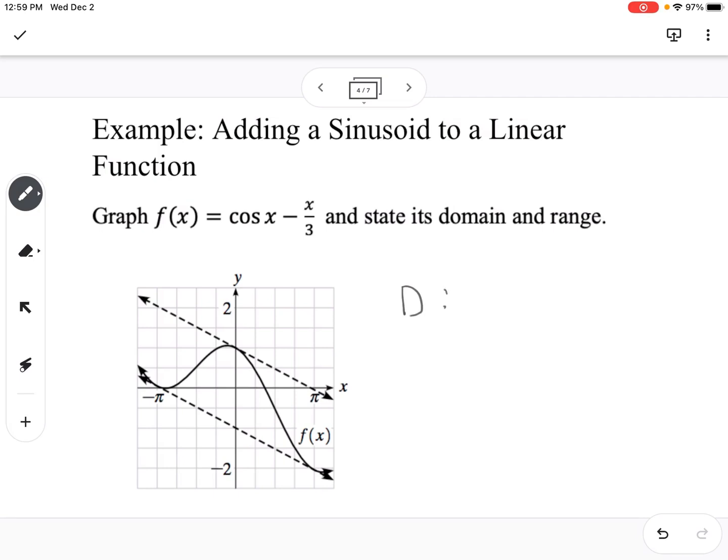But then we want to state the domain and range. So if we look at this, our domain, you can see that this is going to keep going to the left and this direction is going to keep going to the right. So that means our domain would be negative infinity to positive infinity. And then our range, if you look, this is going to continue to go up and this is going to continue to go up, but then because of that cosine piece, it's like a wave within these restrictions. So it's going to keep getting bigger and smaller and bigger and smaller. So our range is actually going to be negative infinity to infinity as well.